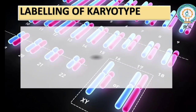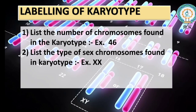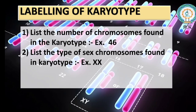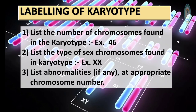Labeling is also important in karyotyping. List the total number of chromosomes found in the karyotype — for example, 46 chromosomes, which is 23 pairs. List the type of sex chromosomes found — for example, XX chromosomes. Also list any abnormalities: if you find any abnormality in the size or structure of a chromosome, list it at the appropriate chromosome number.